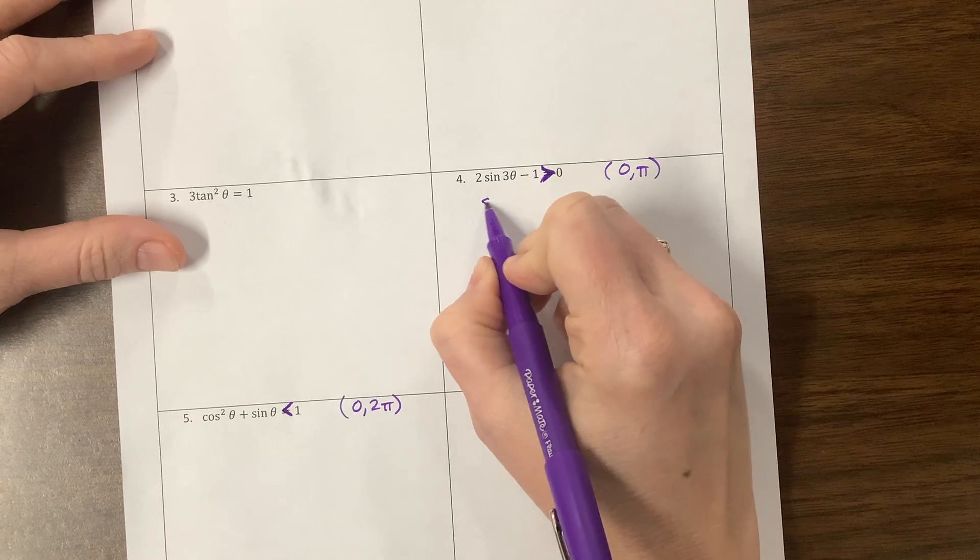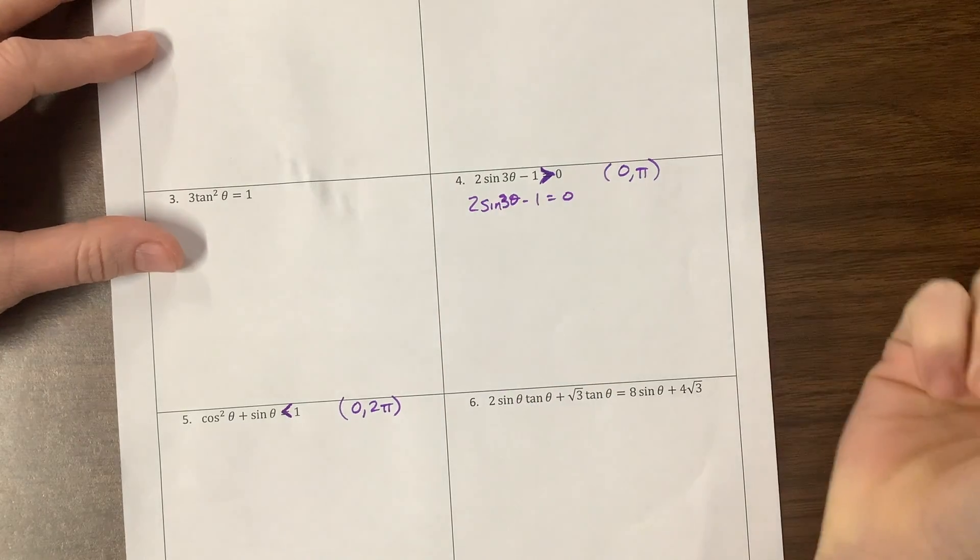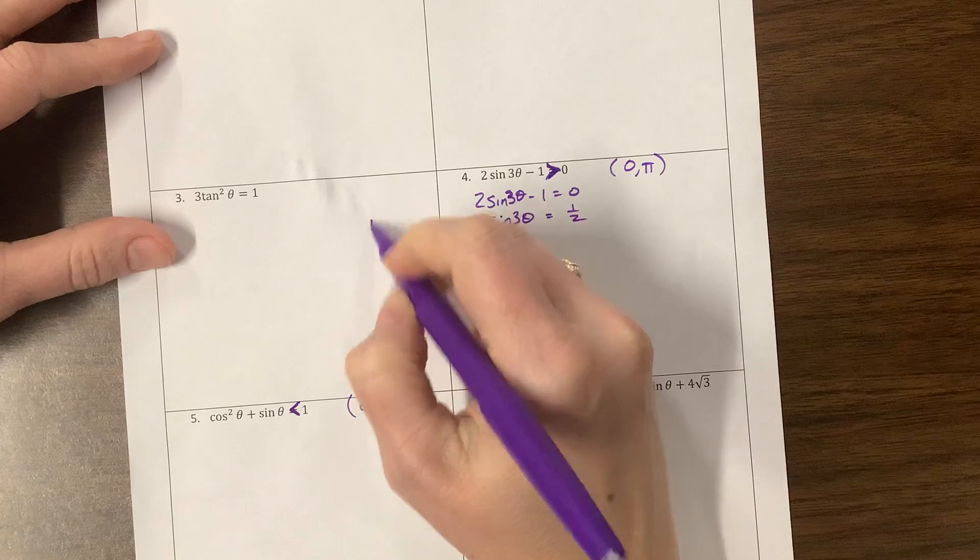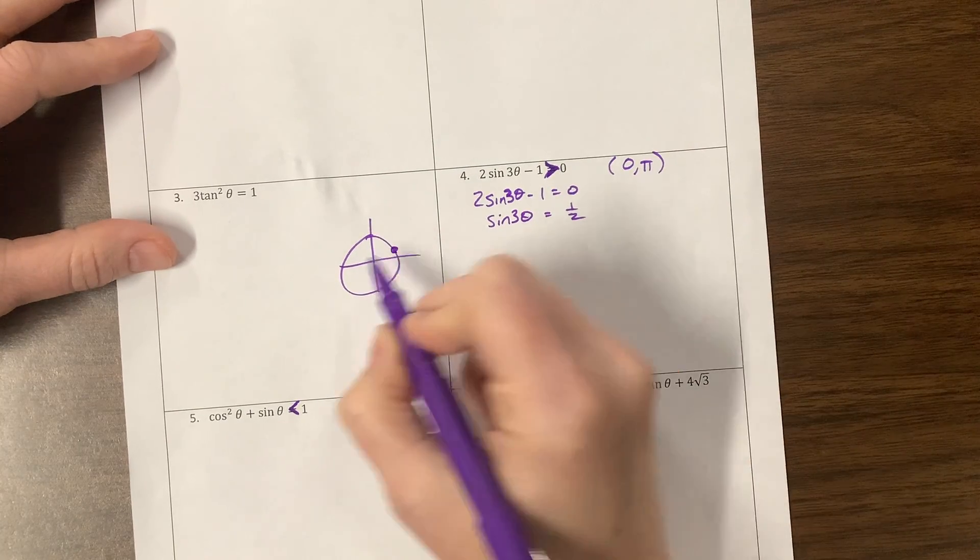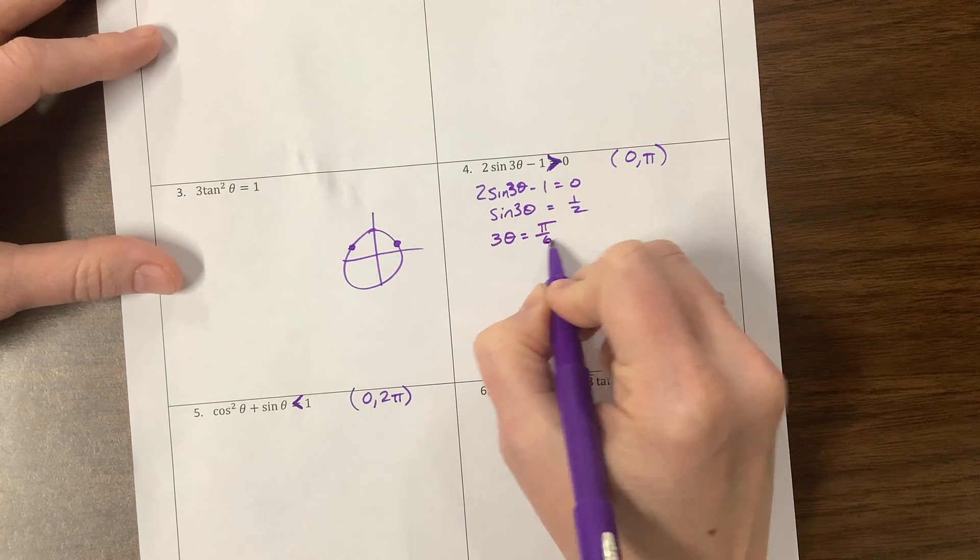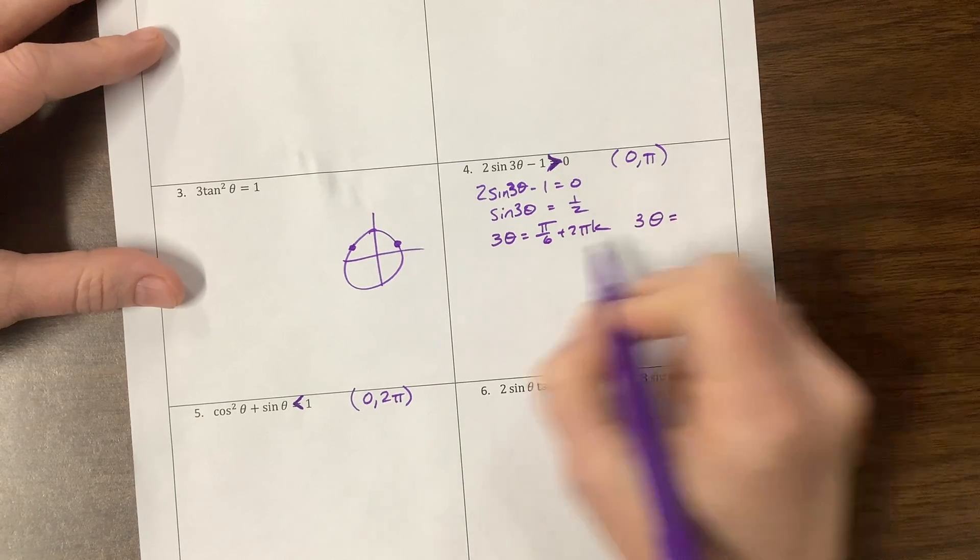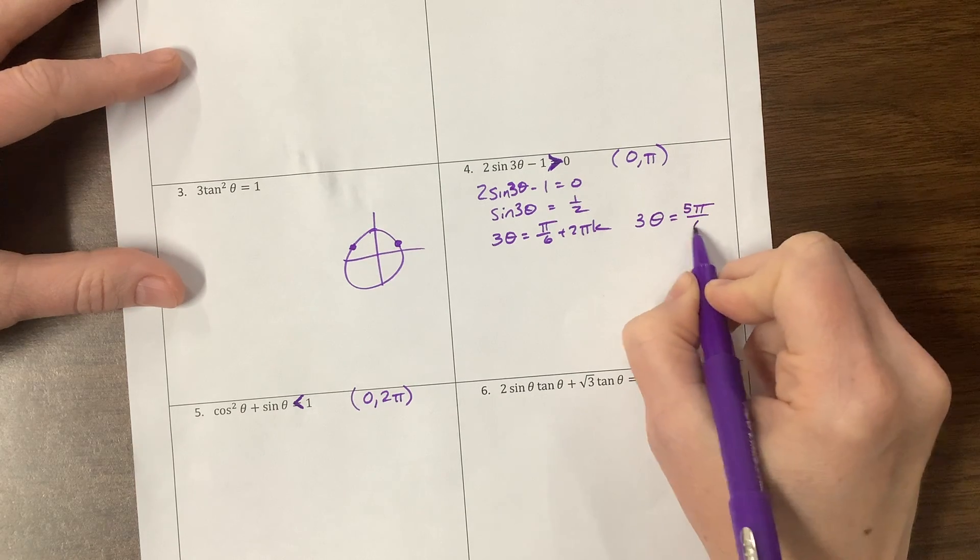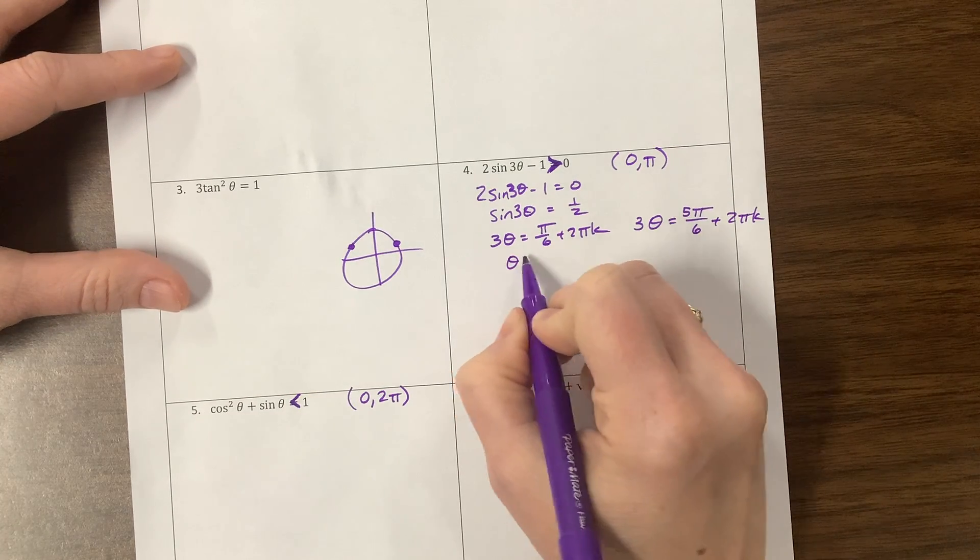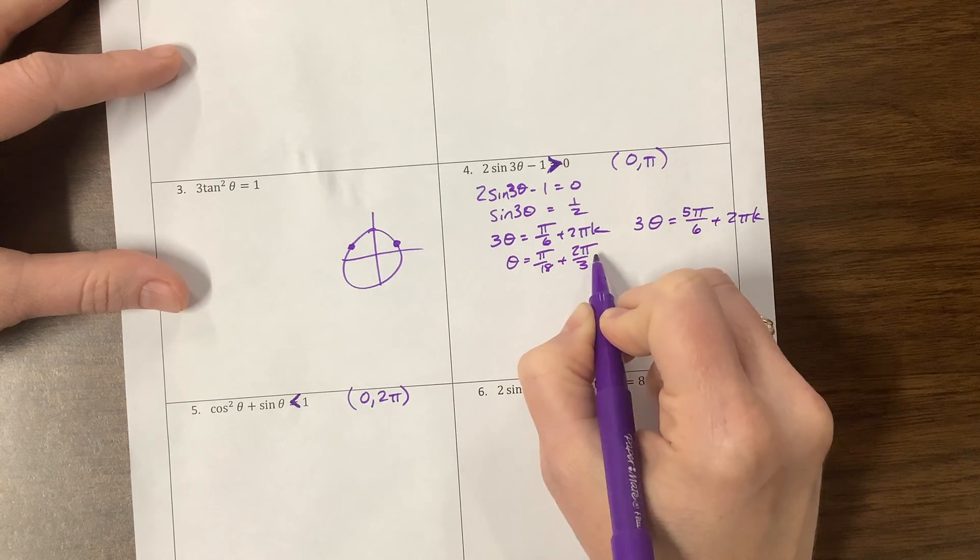So with this one we start with just setting this equal, 2 sine of 3 theta minus 1 equals 0, and then I'm going to solve for sine of 3 theta which would equal a positive 1 half. We know on our unit circle that sine is 1 half at pi over 6 and 5 pi over 6, and so we get 3 theta is equal to pi over 6 and I'm going to write plus 2 pi k on purpose. And we also know that it would equal, 3 theta would equal 5 pi over 6 plus 2 pi k.